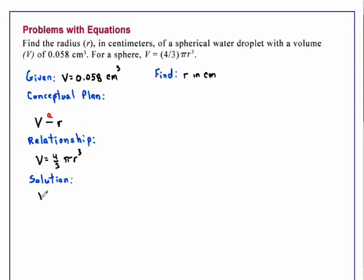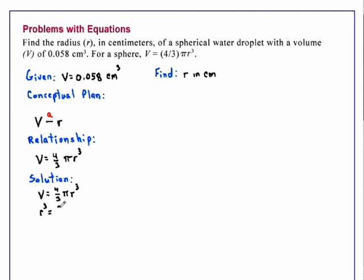Starting with the equation, volume equals 4 thirds pi r cubed. We will first of all solve this for r cubed. So r cubed is 3 times the volume divided by 4 pi. So r is the cube root of 3 times the volume over 4 pi.